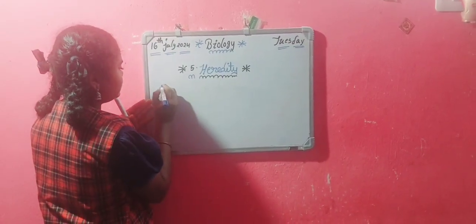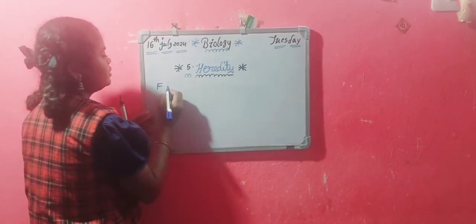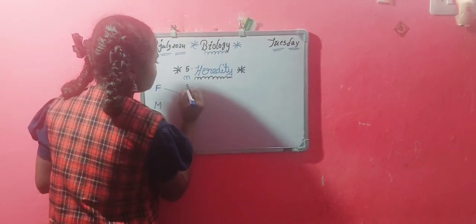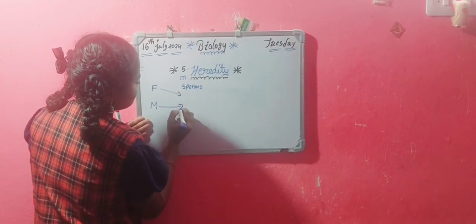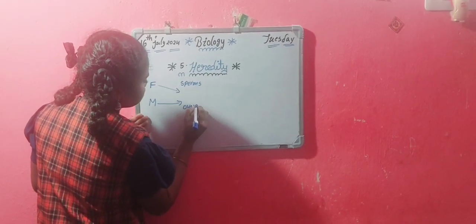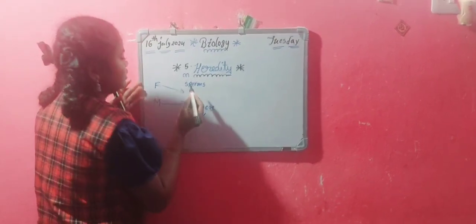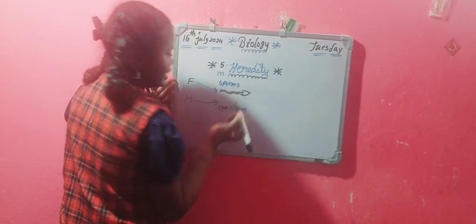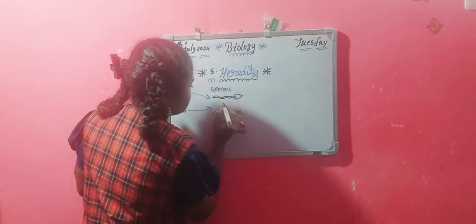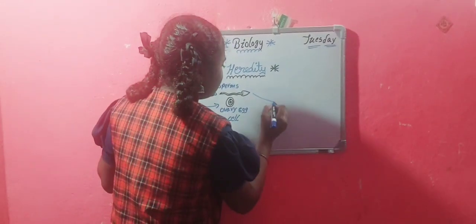First, F means father and M means mother. The father releases sperm and the mother releases ovum. The father sperm structure is like this, and the mother ovum structure is like this. They both mingle together.